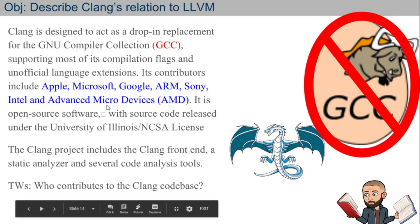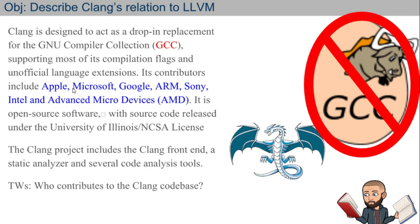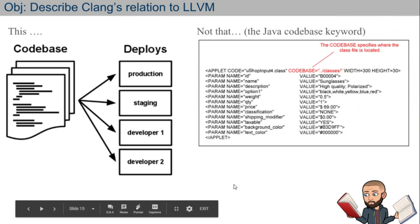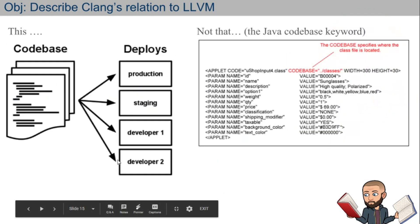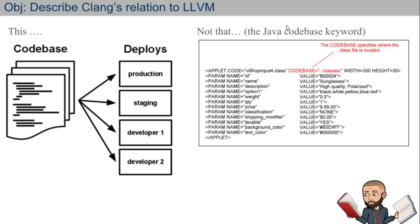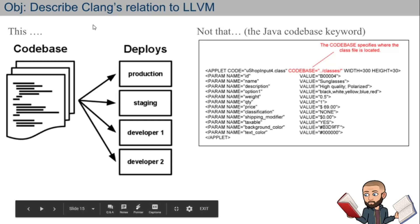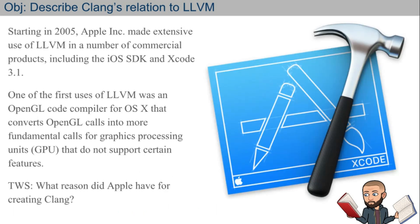Though I listed all these guys as contributors, experts say this is definitely Apple's baby. Starting in 2005, Apple was using LLVM in a number of commercial products, including the iOS SDK and Xcode — an IDE, in fact the first one I ever used. One of the first uses of LLVM was an OpenGL code compiler for Apple's OS X, converting OpenGL calls into more fundamental calls for GPUs.